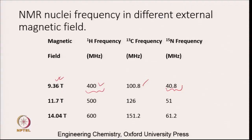On a 400 MHz machine the ¹³C frequency will be 100.8 MHz, whereas the ¹⁵N frequency will be 40.8 MHz. This is on a machine with magnetic field 9.36 tesla. If you change the magnetic field to 11.7 tesla, then your frequency is 500 MHz for proton, 126 MHz for ¹³C, and 51 MHz for ¹⁵N. On a 14.04 tesla spectrometer you have a proton frequency of around 600 MHz, ¹³C frequency of around 151.2 MHz, and ¹⁵N frequency of around 61.2 MHz.